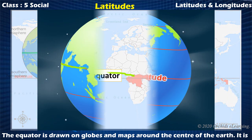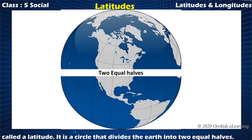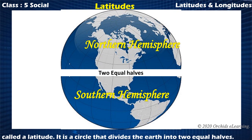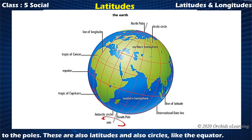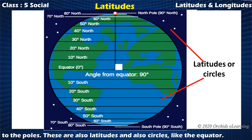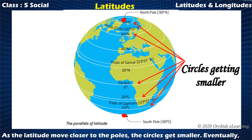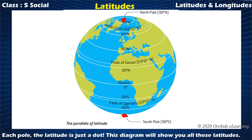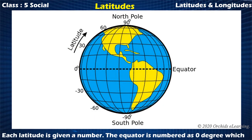The equator is drawn on globes and maps around the center of the earth. It is called a latitude — a circle that divides the earth into two equal halves: the northern and southern hemispheres. In each hemisphere, lines parallel to the equator are drawn from the equator to the poles. These are also latitudes and are also circles. As the latitude moves closer to the poles, the circles get smaller. Eventually, at each pole, the latitude is just a dot. Each latitude is given a number.